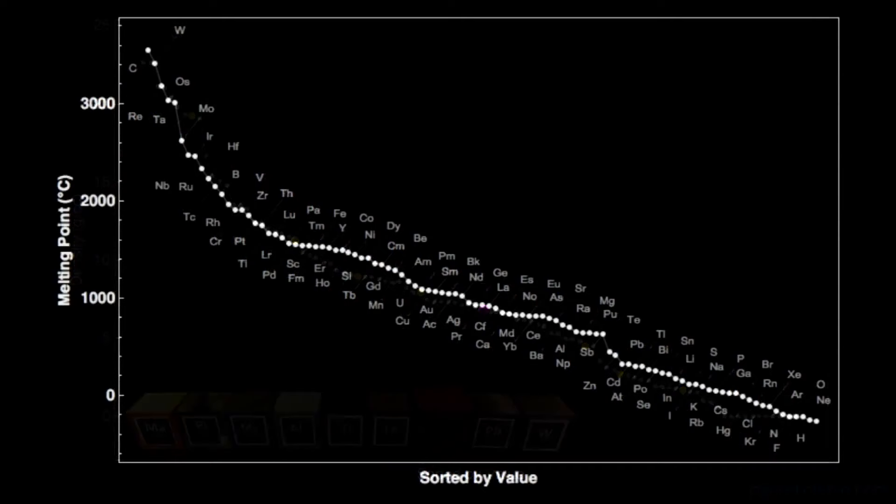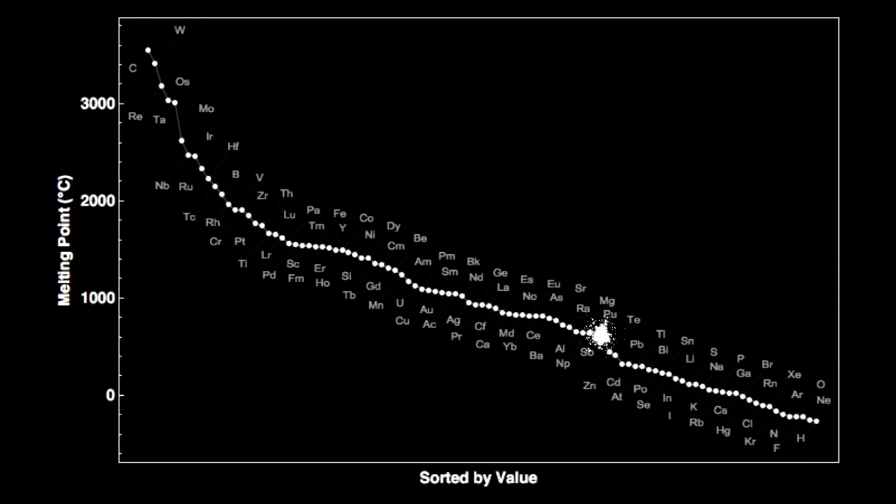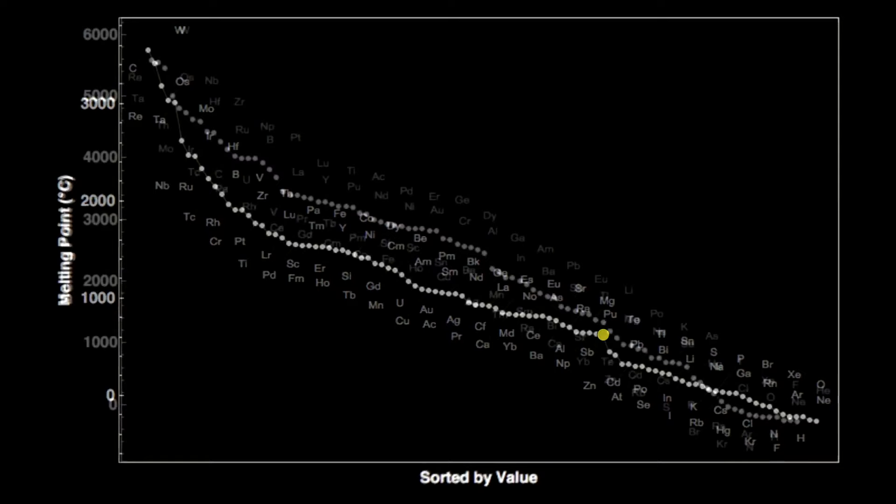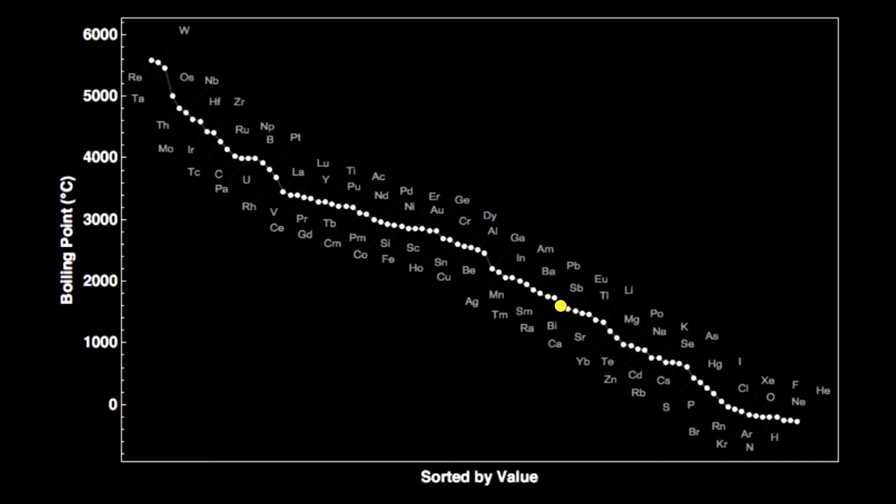Antimony has the 69th highest melting point. A moderately low 631 degrees Celsius or 1167 degrees Fahrenheit. There are 20 other solid elements with lower melting points. Antimony has the 61st highest boiling point at 1,587 degrees Celsius. That's 956 degrees Celsius above its melting point of 631, a pretty small difference between melting and boiling.